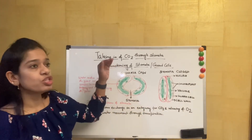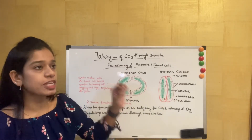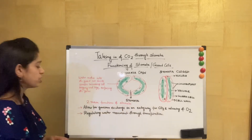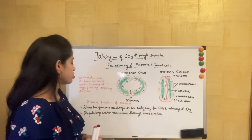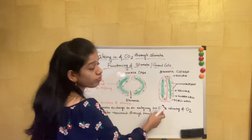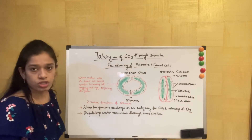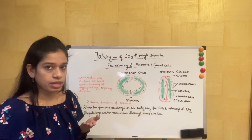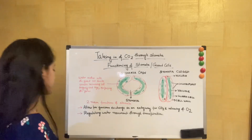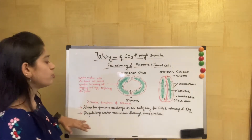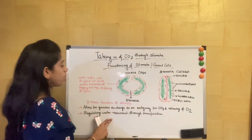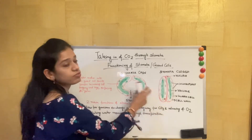Stomata are the tiny pores present on the leaf surface. They have two main functions: first, they allow gaseous exchange — entry of carbon dioxide required for photosynthesis and release of oxygen produced as a by-product. Second, they regulate water movement for transpiration. The opening, closing, and structure of stomata are very important points to remember.